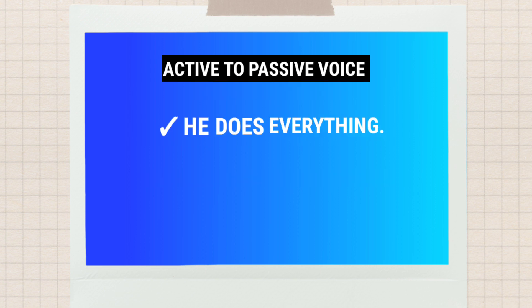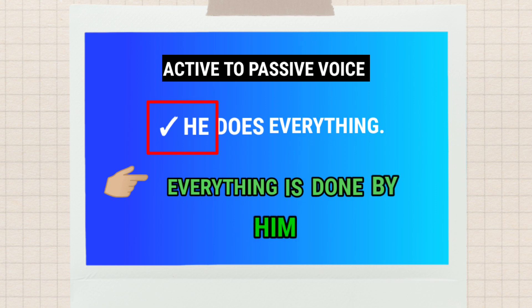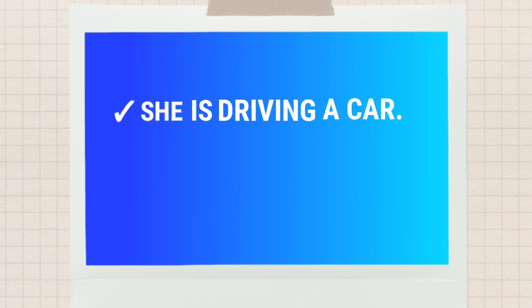Next is how to change active voice into passive voice. Here you can see the sentence: 'He does everything.' To change this into passive voice, you bring 'everything' first, then auxiliary verb 'is', then 'done', then 'by', then 'him'. You use 'is' because 'everything' takes a singular form, and 'done' is the past participle of 'do' — do, did, done.